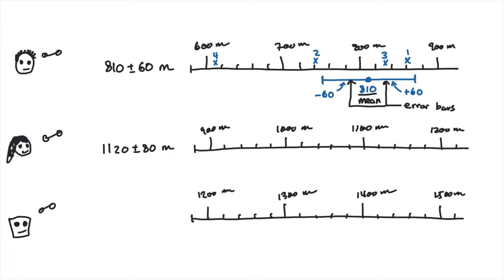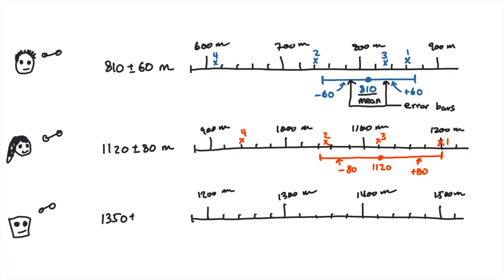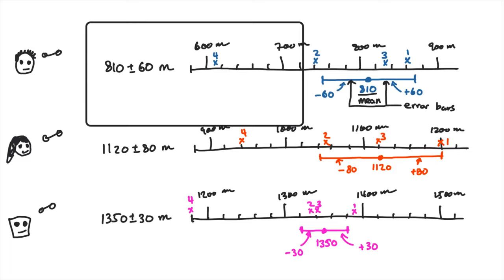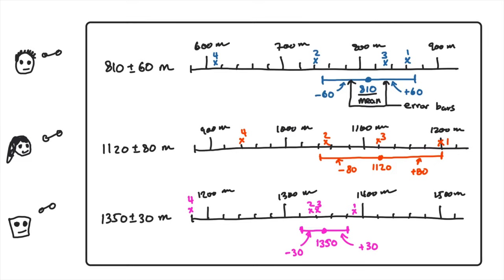Negda's measurement was 1120 plus or minus 80 meters. She draws a filled-in circle for the average and draws error bars 80 meters away from the average. The data she measured all fit well into the error bars. Robo also draws its calculated measurements of 1350 plus or minus 30 meters in the graph with the error bars.